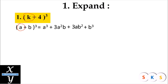We will take a as k. At the place of a we will write k, and here 4 — that is b. So at the place of b we will write 4. We will substitute the value of a as k and value of b as 4 in this formula.